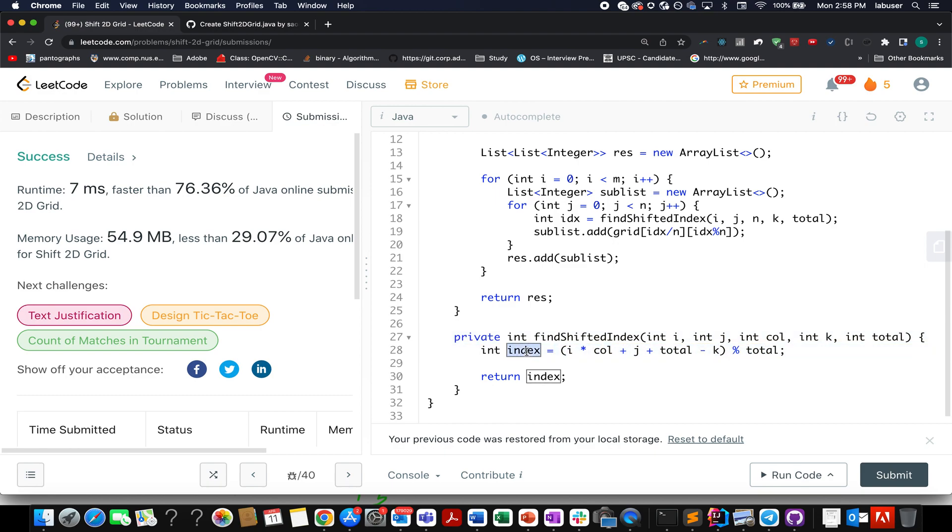The flat target index and then you apply the formula flat target index by column to identify your target row element and flat index modulus n to identify your target column index. Once you have identified both your target i and j values, you extract it from the grid and you add it to your sub list. Once you are done with this, you simply return the result in the end.